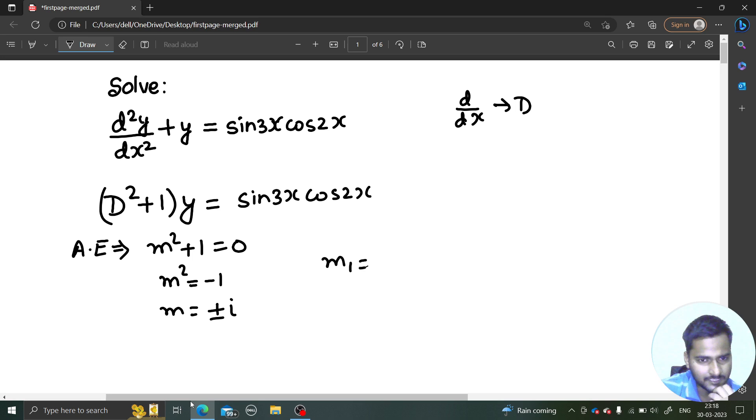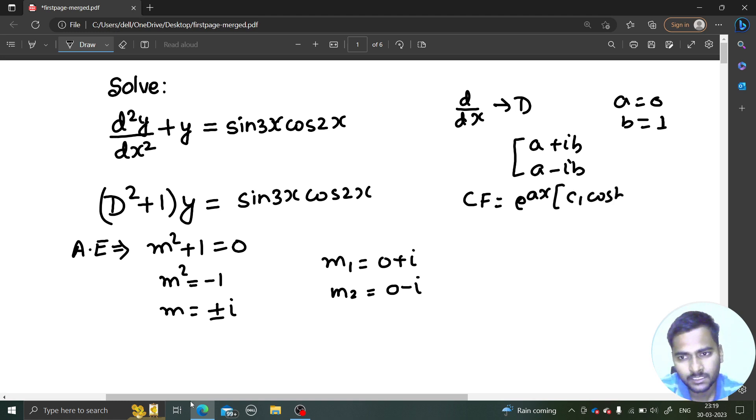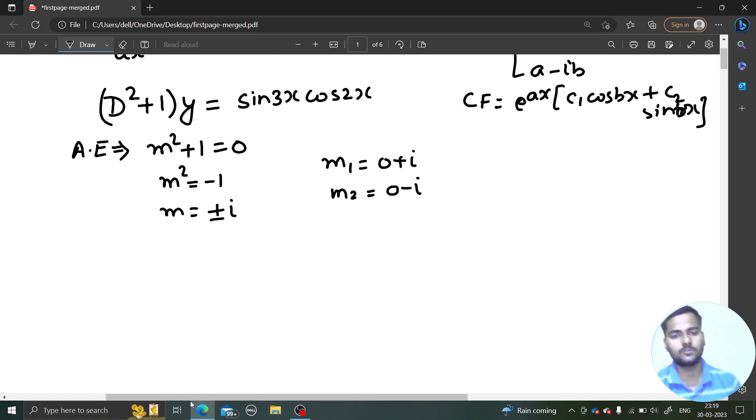If I see the roots, the first root I can write as 0 + i, second root as 0 - i. If I compare this with a ± ib, my a is 0 and my b is 1. In this case when roots are imaginary, your complementary function is written as e^(ax)[c₁cos(bx) + c₂sin(bx)].